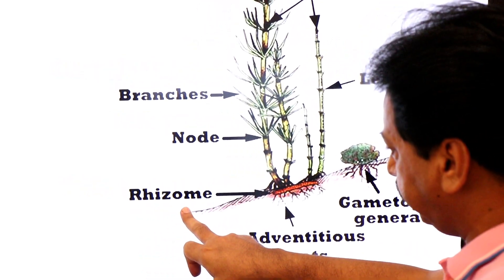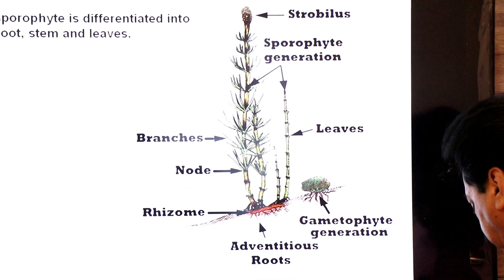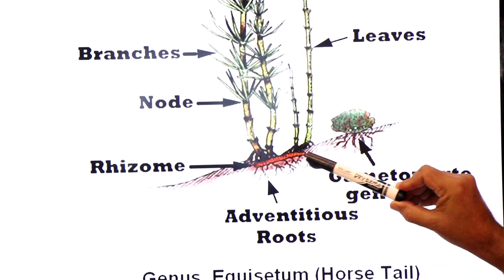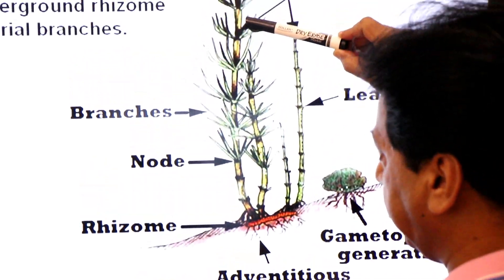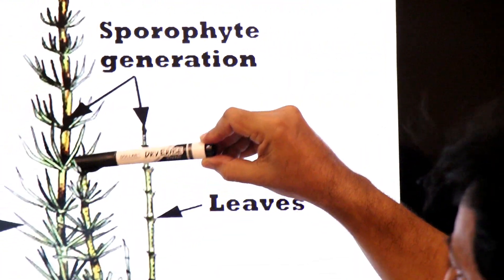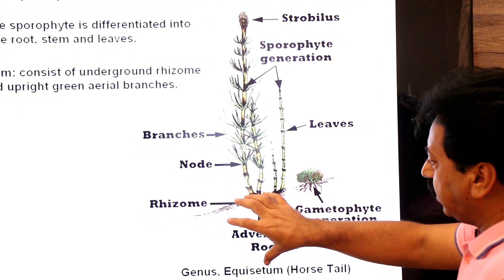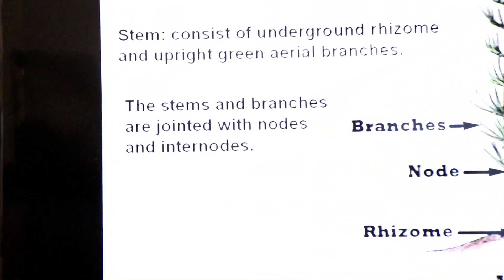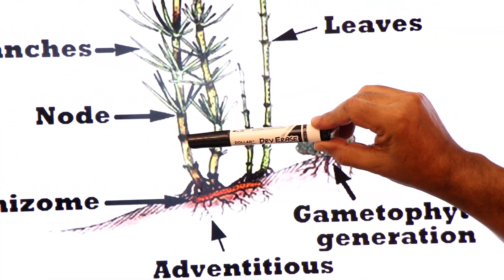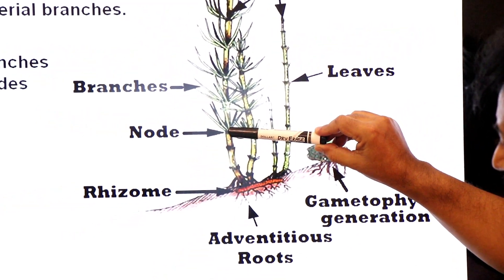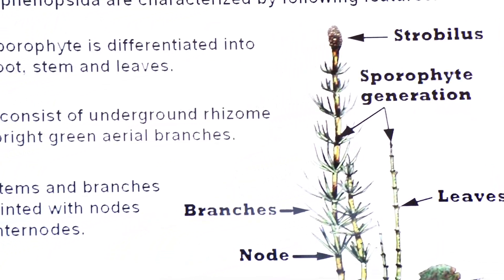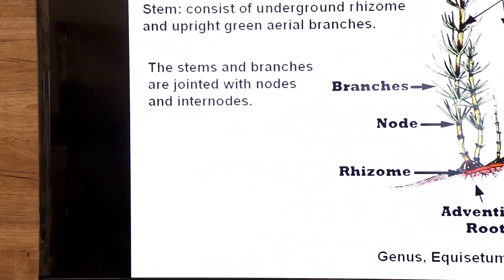Now regarding the stem: the rhizome is horizontal and stores food, while the erect stem stands upright. The stem consists of an underground rhizome and upright green aerial branches, meaning it is partially horizontal and partially erect. The stem and branches are jointed with nodes and internodes. These nodes are also called joints — a node is a point from where leaves arise. Leaves are present on the upper portion of the stem.